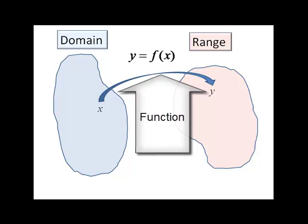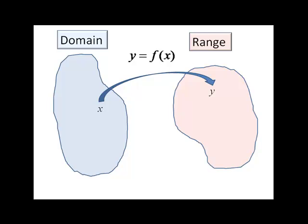f is the process of going from an element in the domain to an element in the range. And once again, we can represent this with an ordered pair. Now, for multiple inputs in the domain, we get multiple outputs in the range.